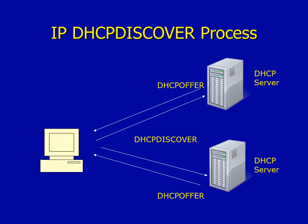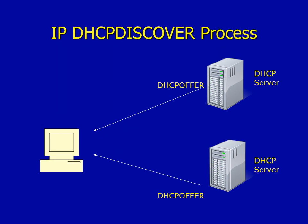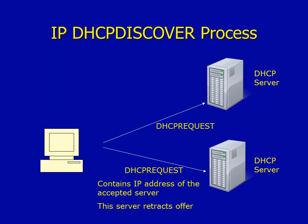Both servers reply with a broadcast message called a DHCP Offer. This DHCP Offer contains a number of things, including the source IP address of the DHCP server, an offered IP address, a subnet mask, the length of the particular lease, and a number of options configurable by the administrator. These options include IP addresses for a DNS server, a default gateway, and so on.